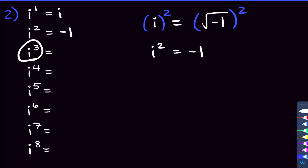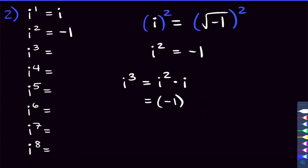For i cubed, we write it as i squared times i. We just proved i squared is negative 1, so i cubed equals negative 1 times i, which is negative i.